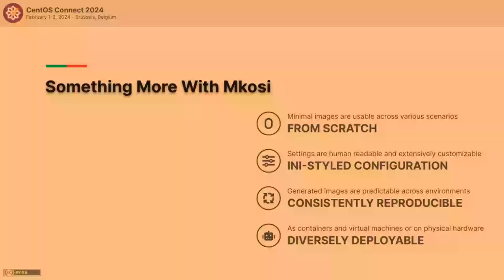MKOSI is extensively customizable. Even if the config doesn't do what you want, you can write shell scripts and add them to phases — before it starts executing, when it's finalizing, or when it's done installing. Most importantly, it's reproducible: the image you get from one config stays the same throughout. The deployment target is also very flexible. You can generate a subdirectory, a raw archive image usable as a container via systemd-nspawn or a virtual machine via QEMU, or flash it to a hard drive, SD card, or flash drive for physical hardware. You can also build unified kernel images; it requires systemd UKI, which is one of the dependencies when you install MKOSI.